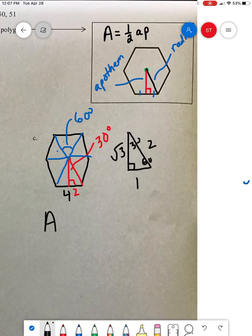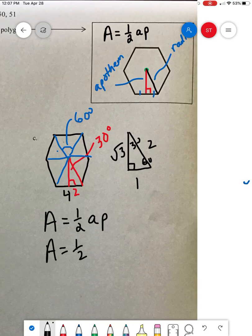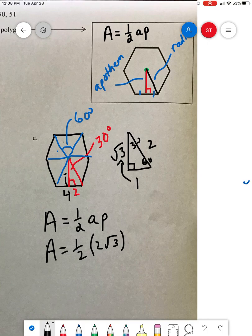So if we write down our formula, A equals 1 half a P, we can bring this baby home. A equals 1 half. What's the a? That's this right there. Well, how do I go from here to there? That's like going here to there, so I just multiply by radical 3. So my a is 2 radical 3.